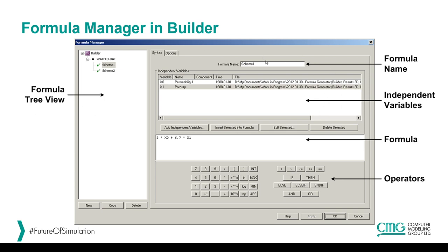The first box is to input the formula name for the formula you are creating. Then you have the independent variable section, where you add all the variables that will be part of your mathematical expression. In the third box, you write or type in the mathematical expression — you can use your keyboard or the buttons provided.